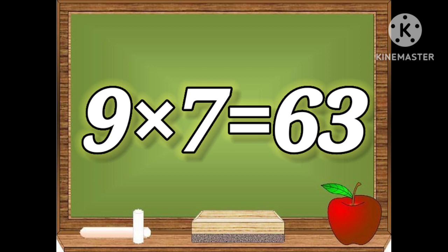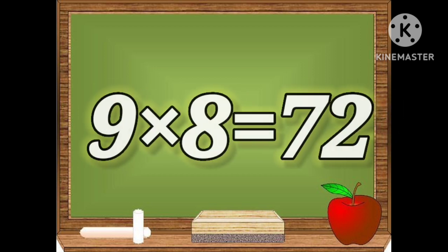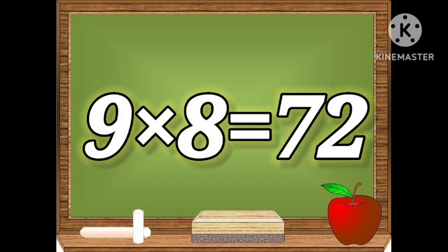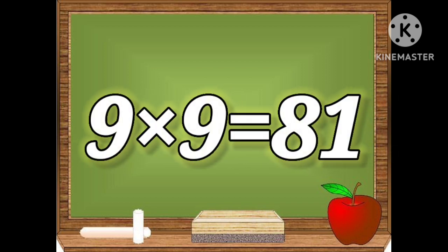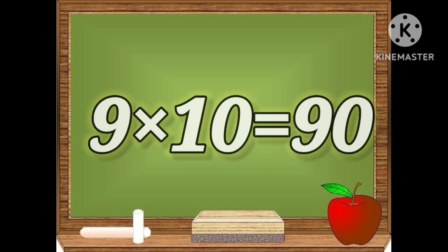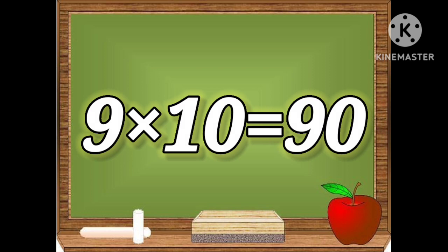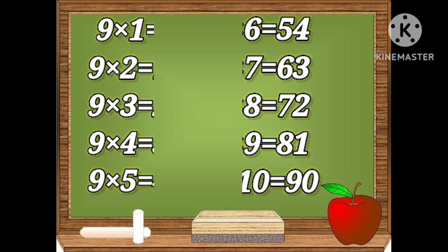Nine eights are seventy-two. Nine nines are eighty-one. Nine tens are ninety. Let's repeat the table.